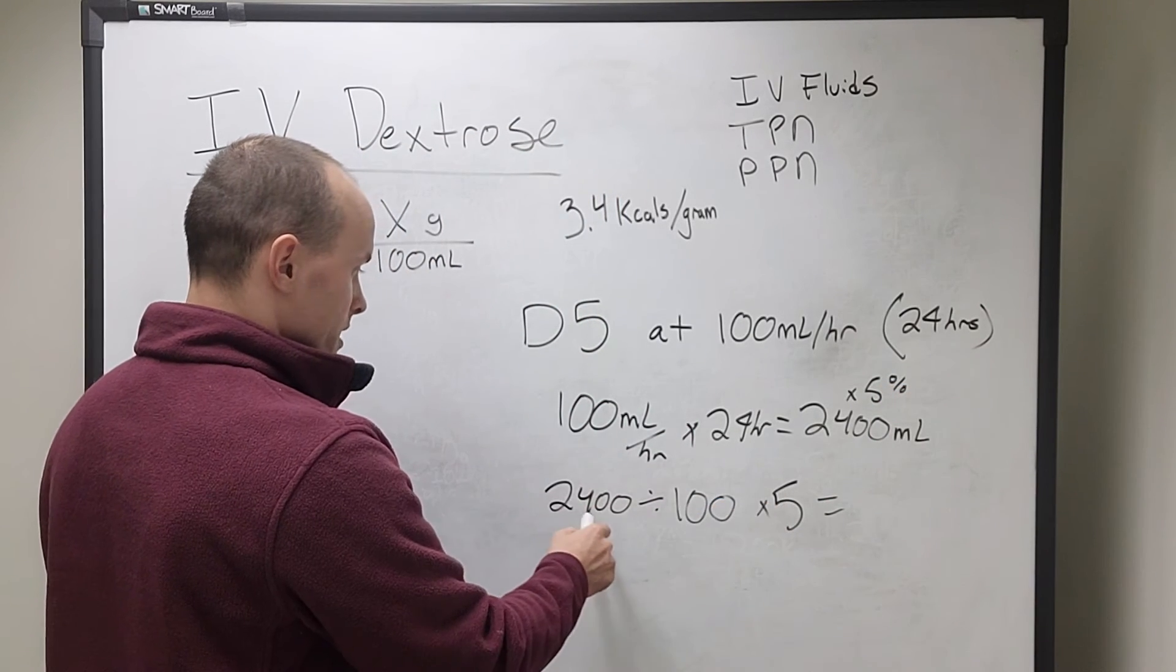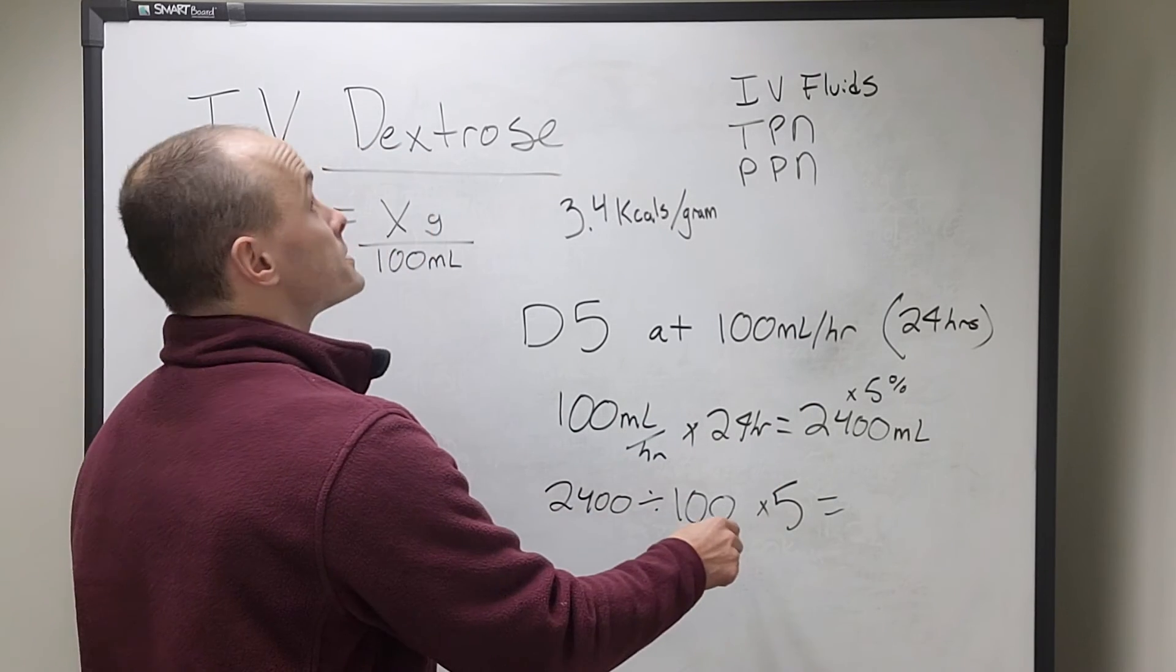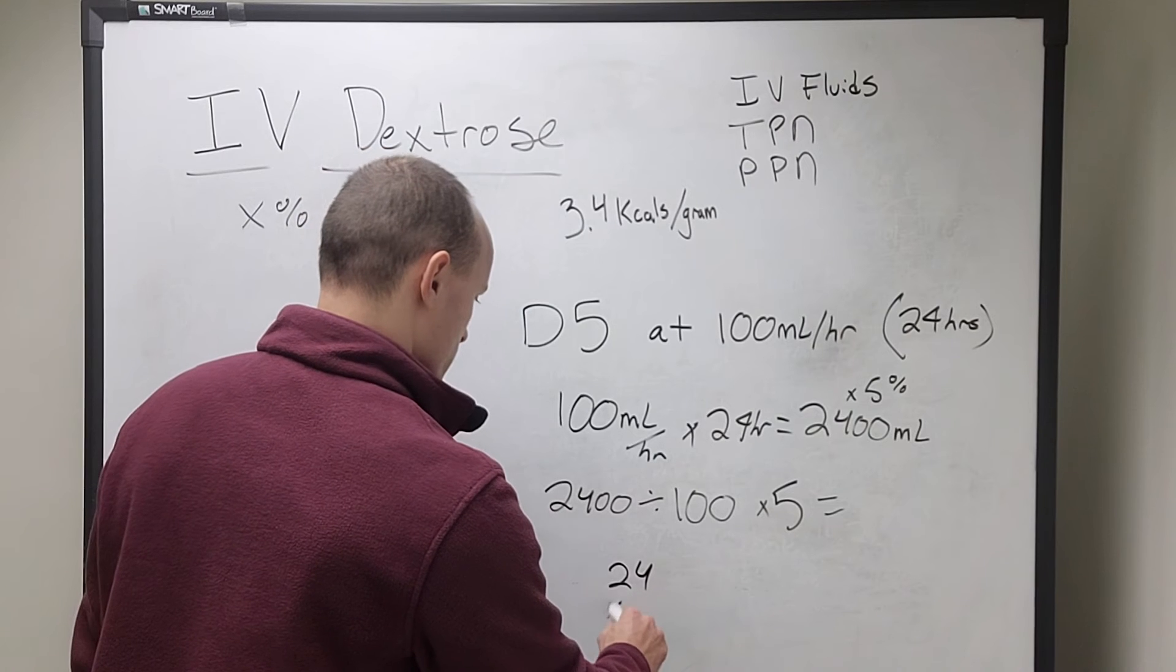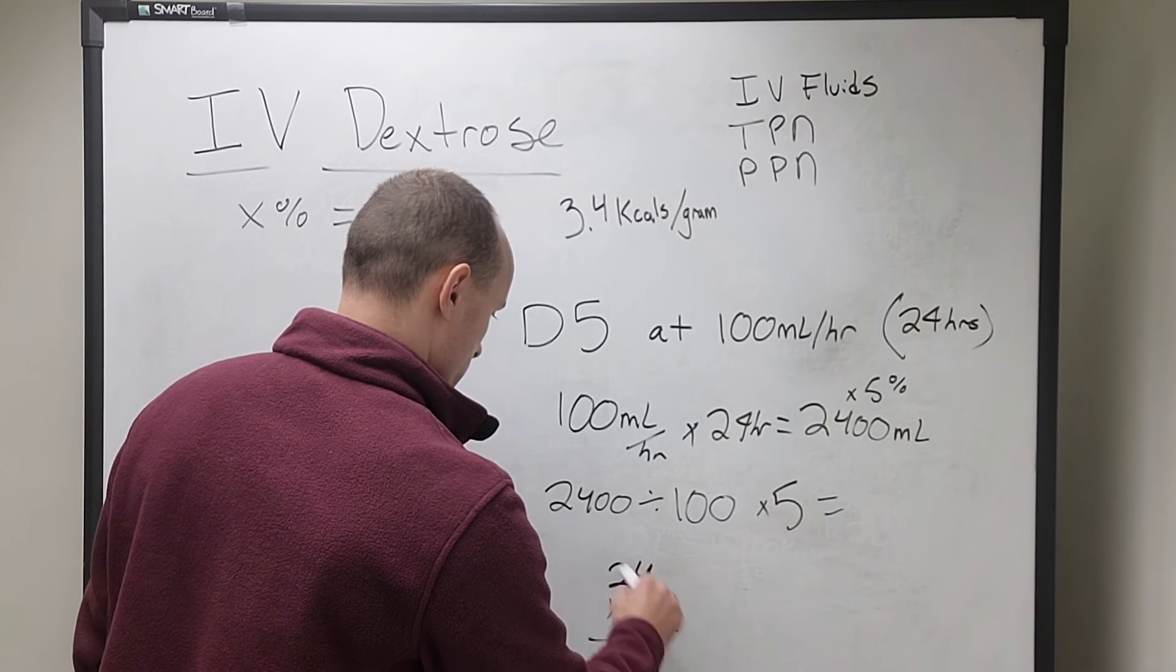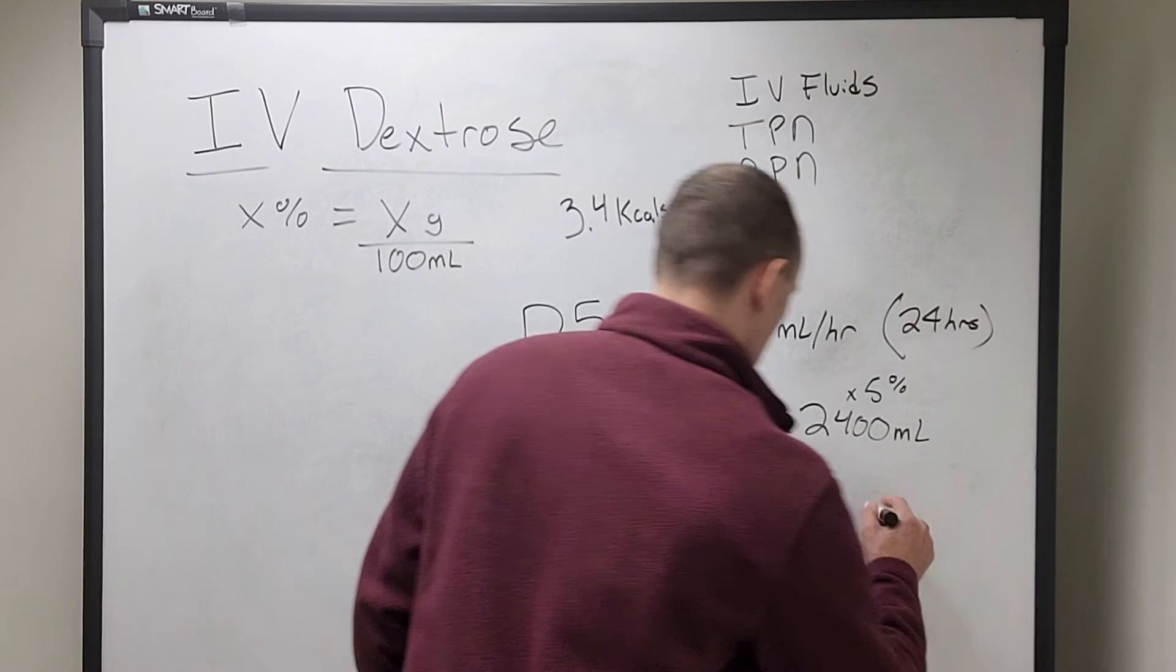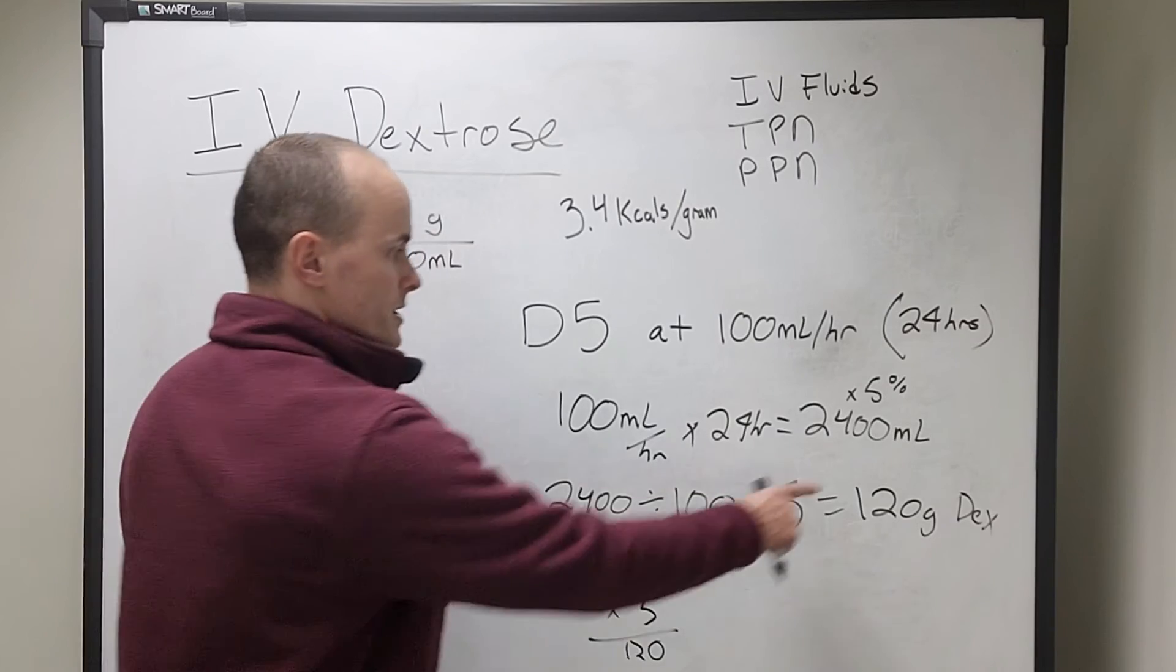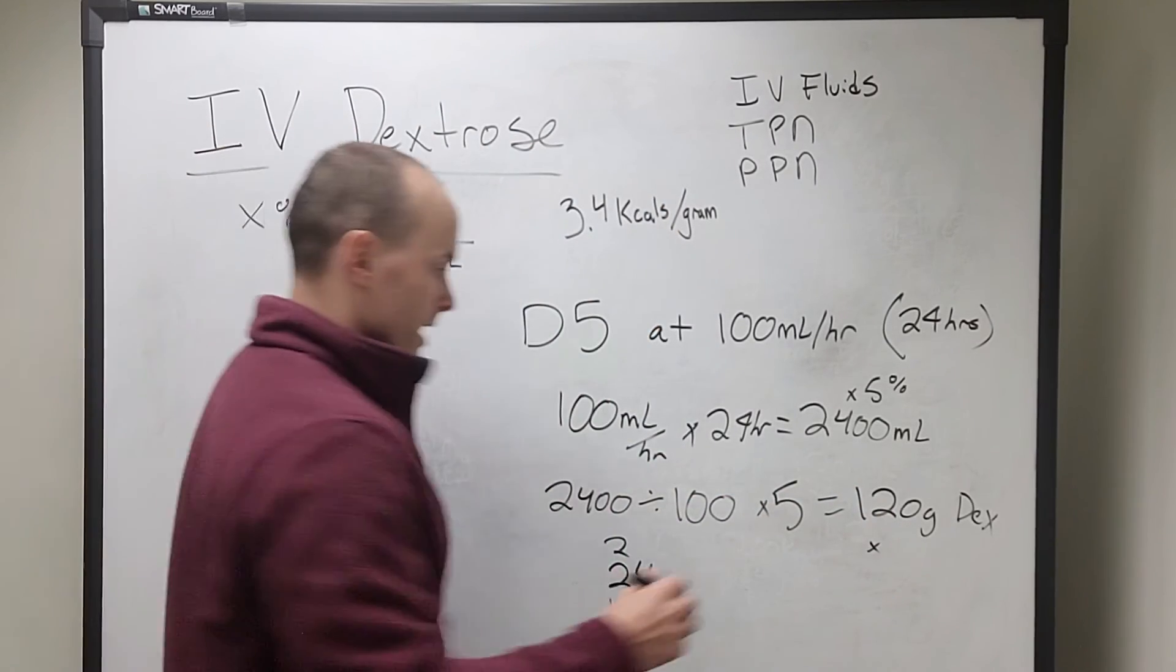So this is going to give you 24. So 24 times 5, which is 120. Cool. So 120 grams of dextrose.